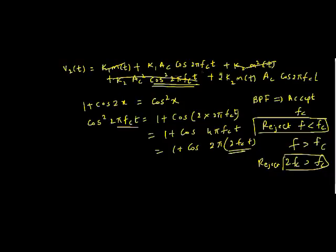What I will be left with after sending the signal through bandpass filter - this is my output of bandpass filter. I reject frequency which is less than fc and also reject frequency which is greater than fc. In this case, greater than my fc is this term. I have eliminated this term in the equation.